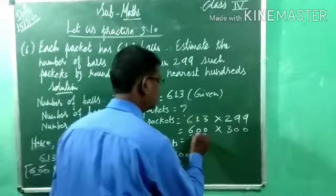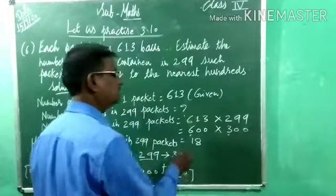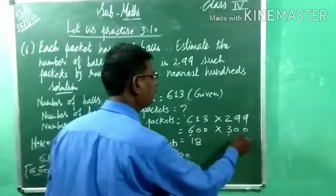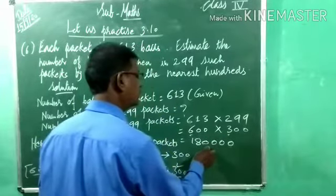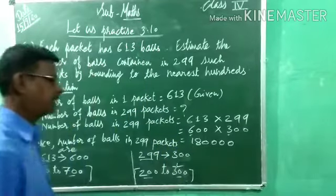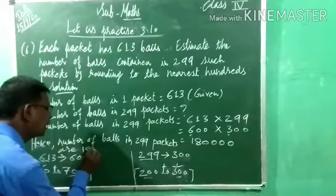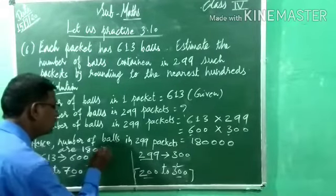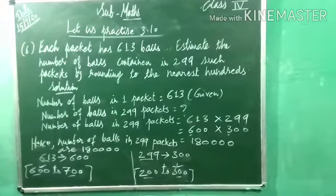Just do the multiplication of the numbers: 6 and 3. 6 threes are 18. How many zeros? 1, 2, 3, 4 — four zeros total. So the answer is 1,80,000 — that is 180,000. Hence, the number of balls in 299 packets is 1,80,000. In this way we solve word problems.